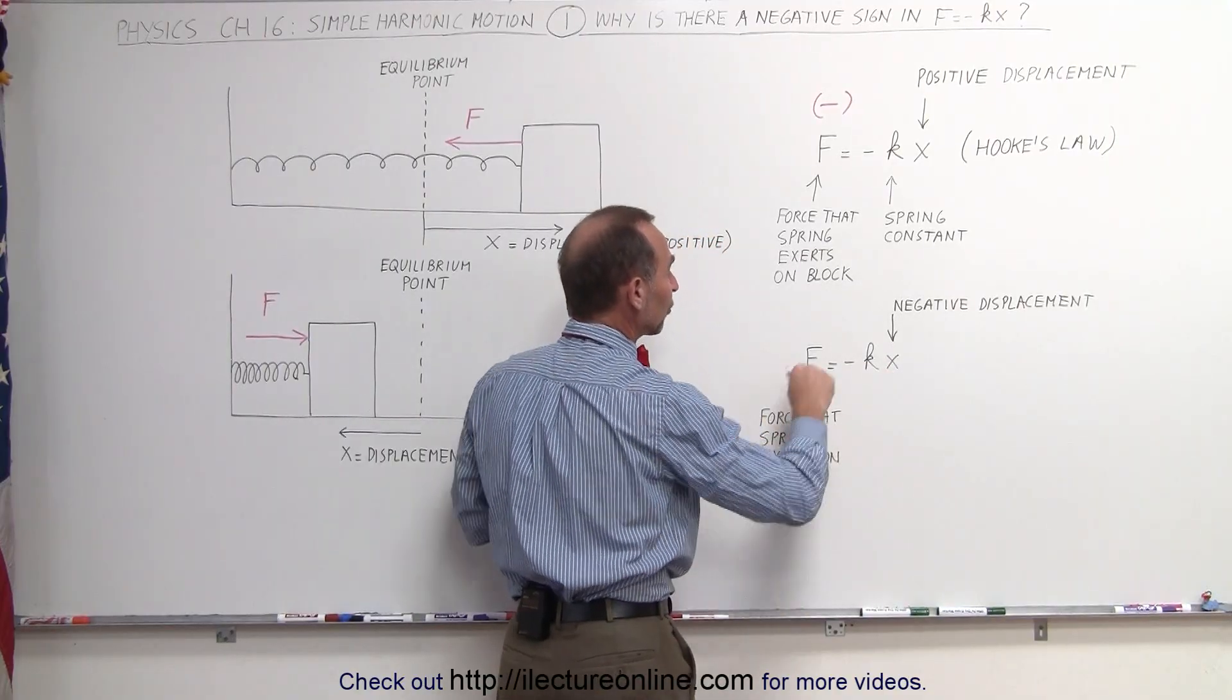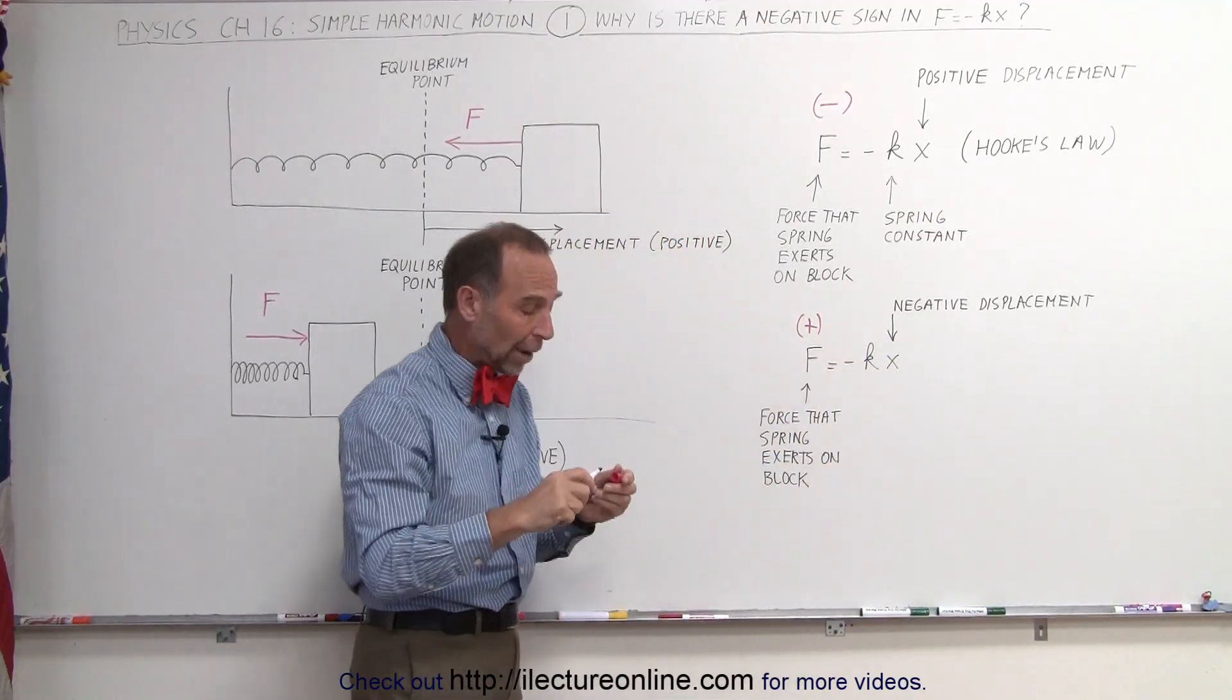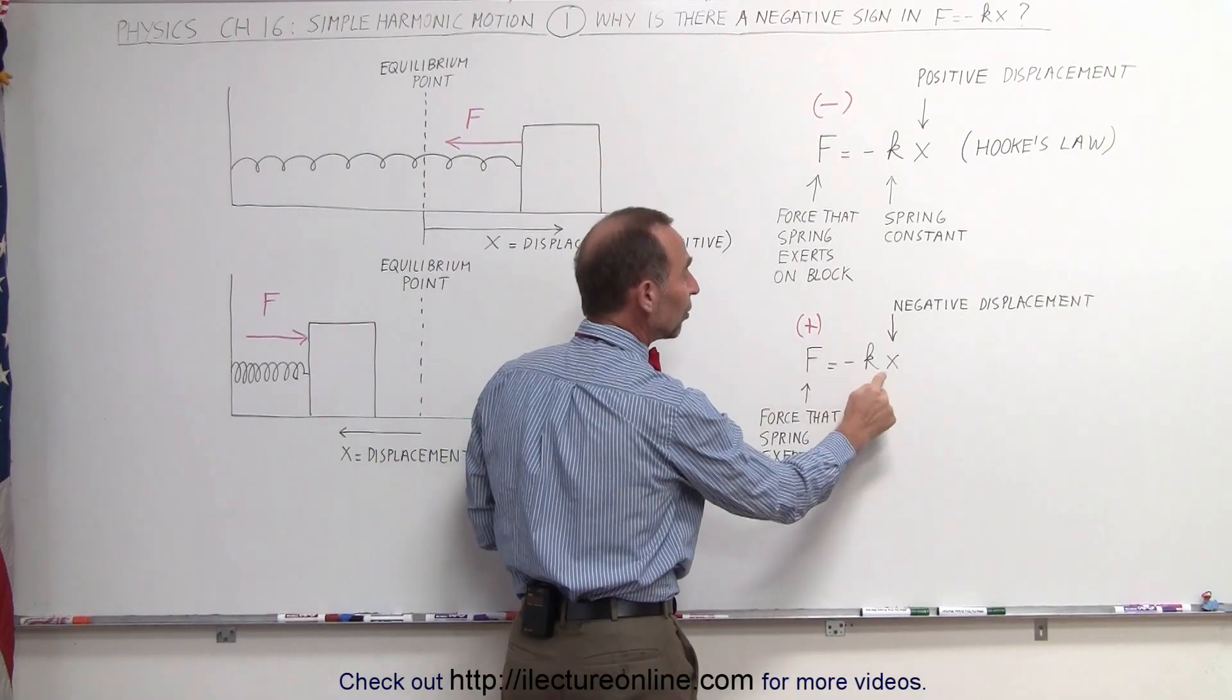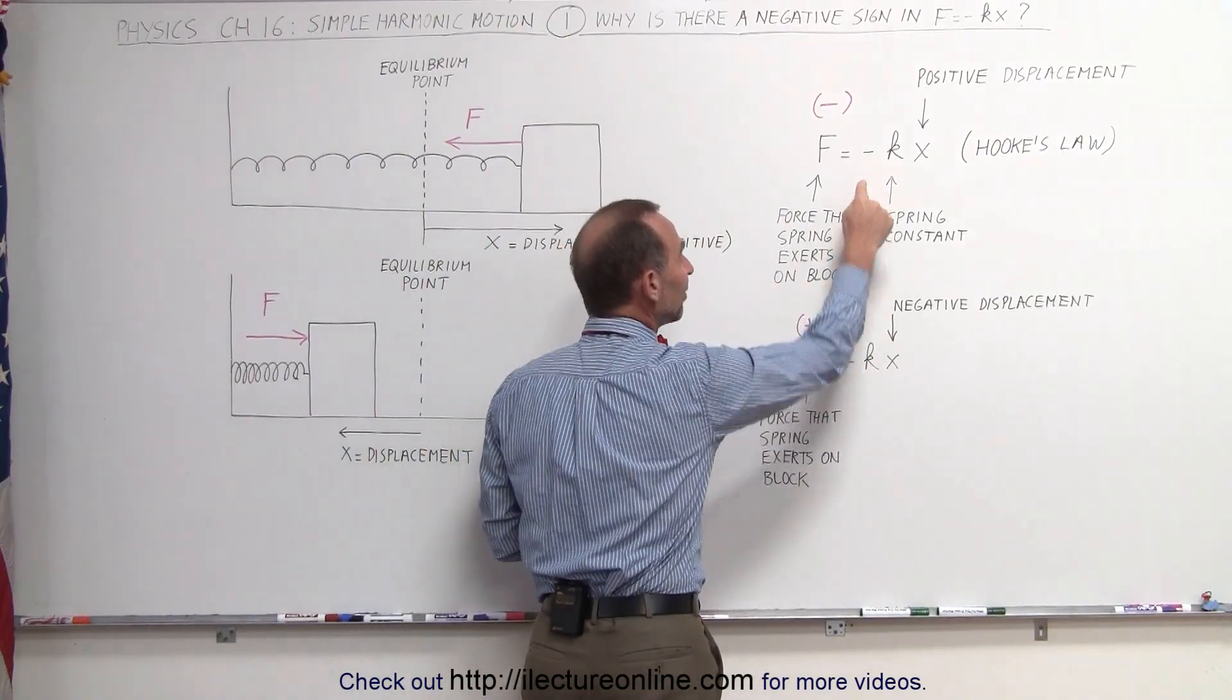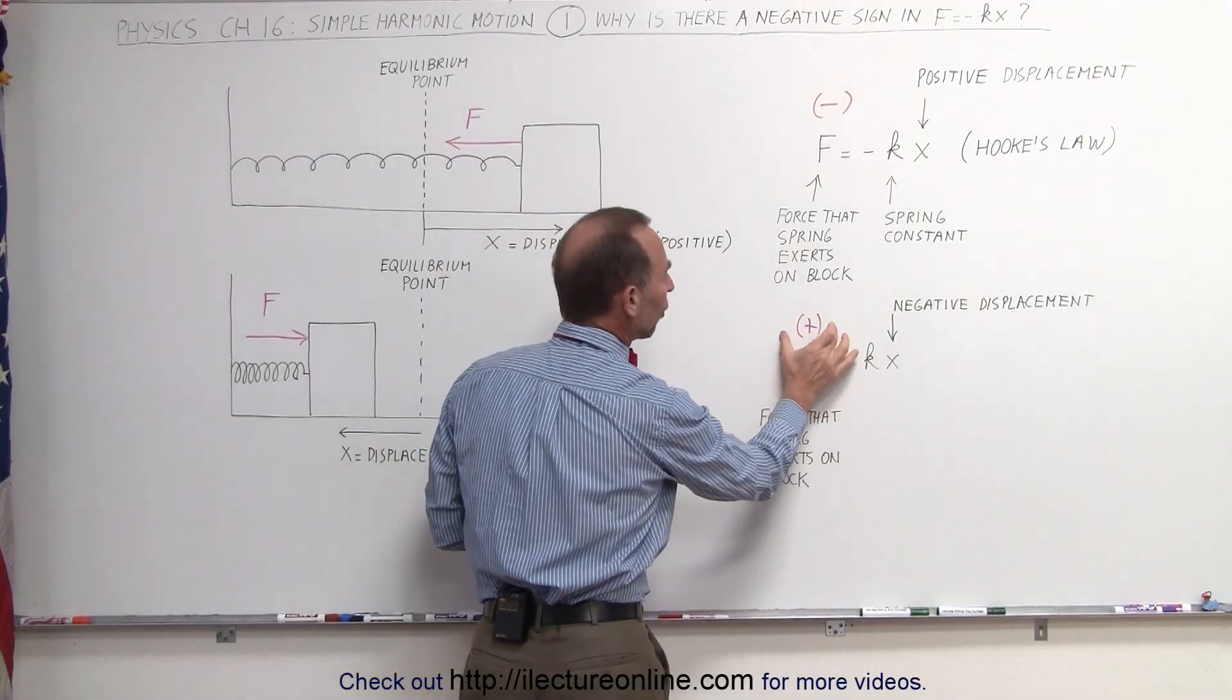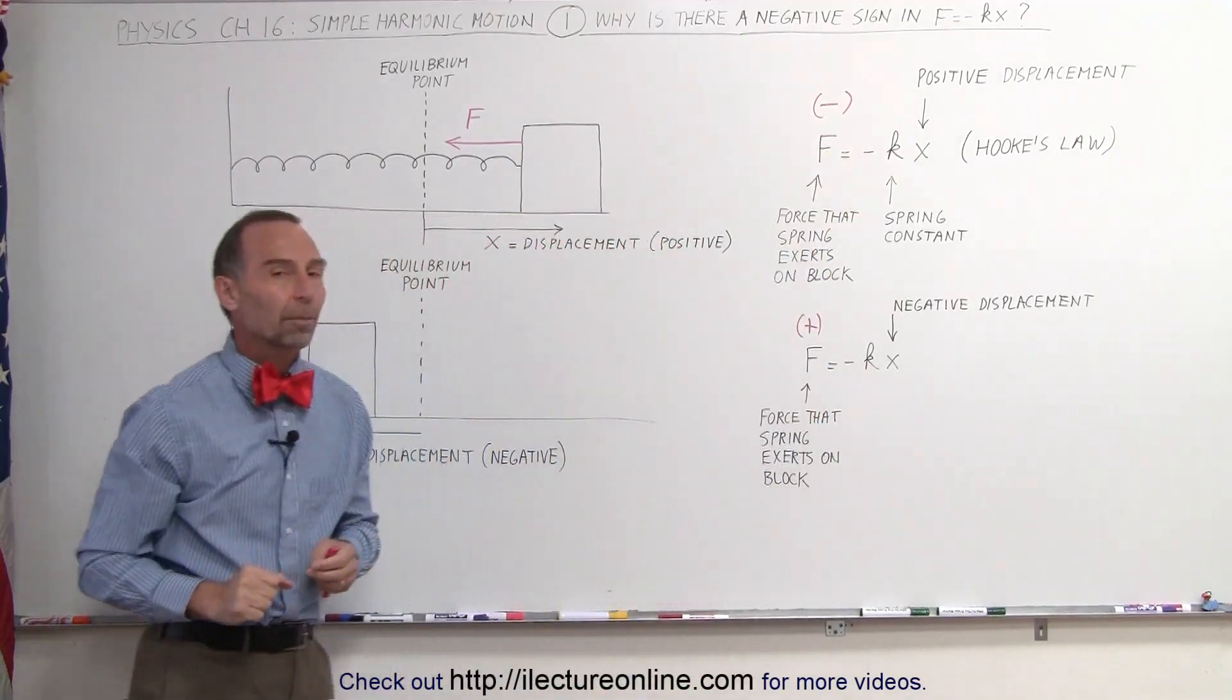And we know now that the force is exerting a positive force, a force directed towards the right on the block, and the only way to get the force to be a positive is to take the negative displacement and multiply it times the negative sign. So the negative sign is always there to direct, or to give us the correct direction or the correct sign for the force that the spring exerts on the block.